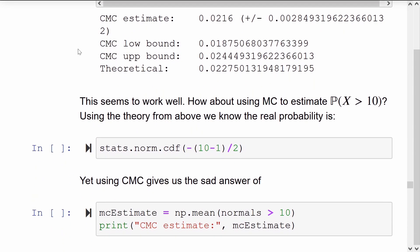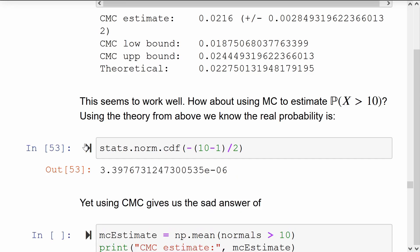And so our Crude Monte Carlo estimate is quite rough, but appears to be accurate. It agrees with the true value to one significant digit, and the wide confidence interval reflects this. If we were to try to use a larger threshold though, for example, the tail probability for 10, we know that this should be about 3 by 10 to the negative 6.